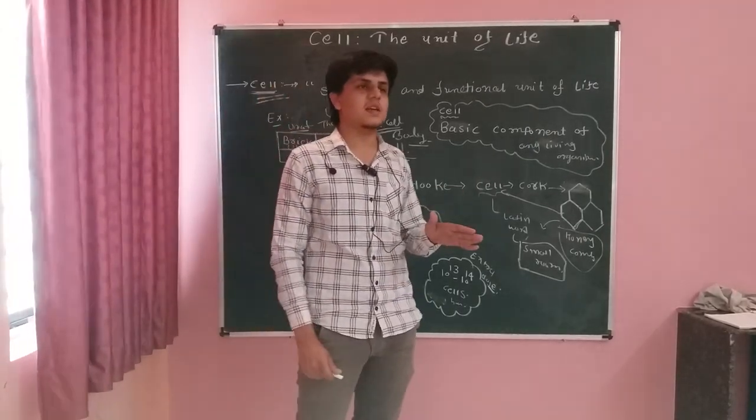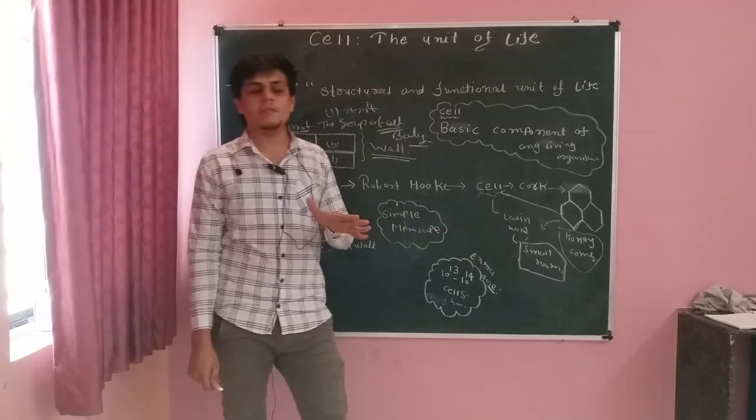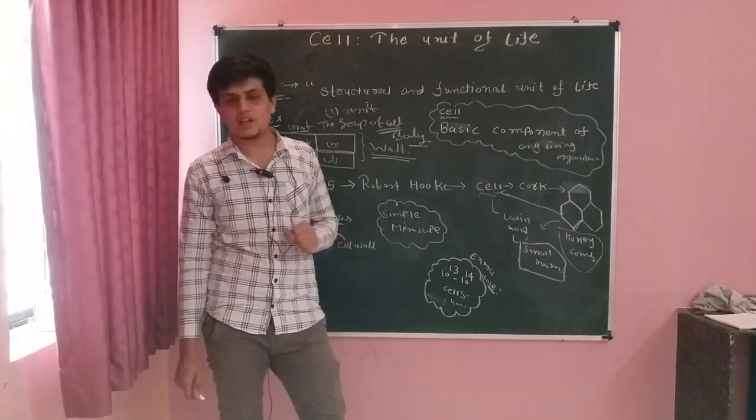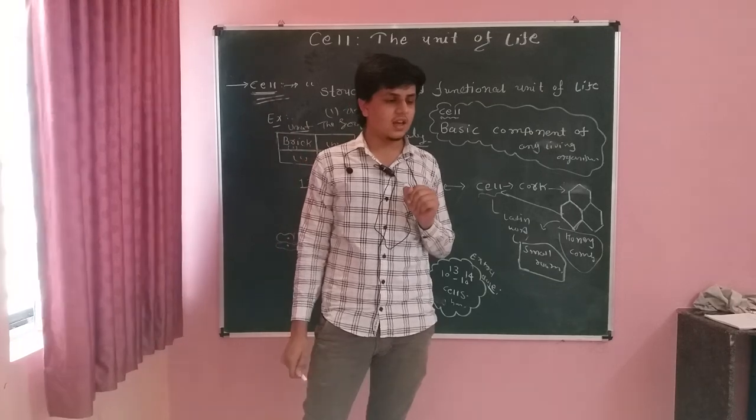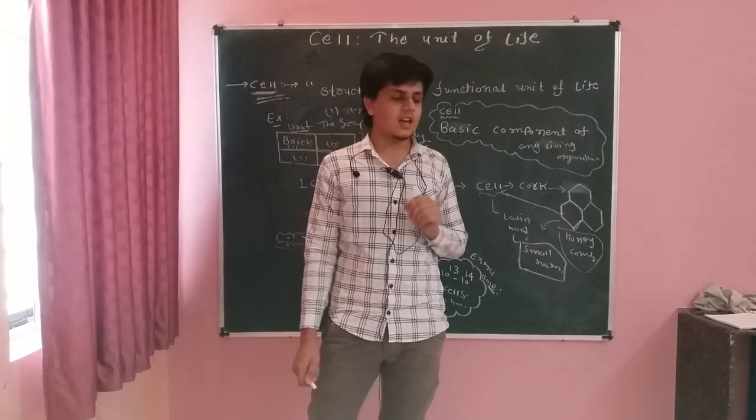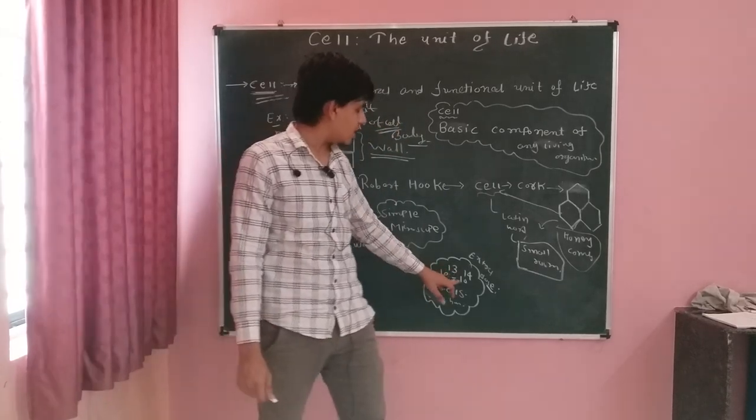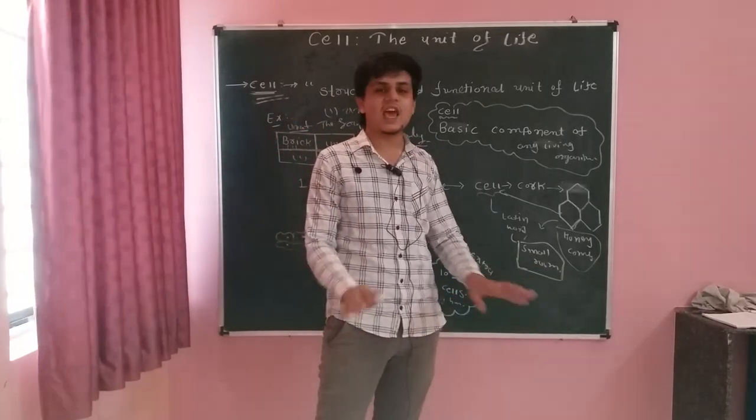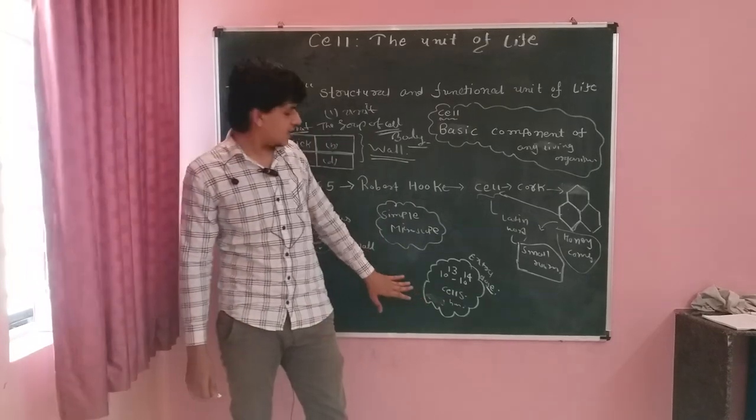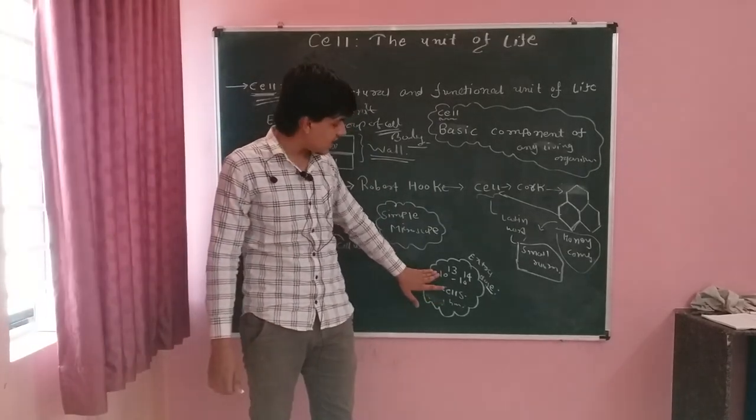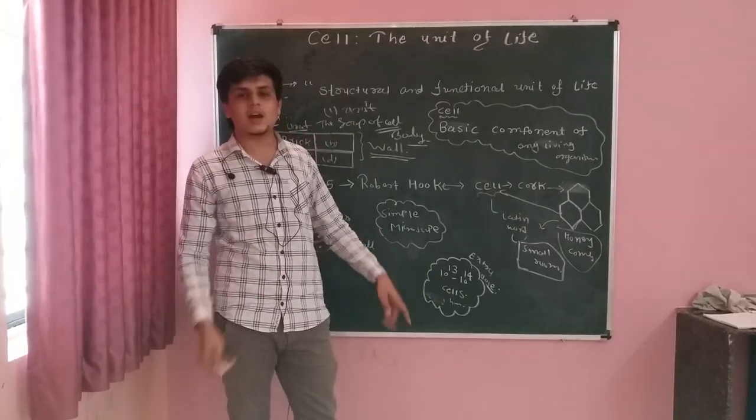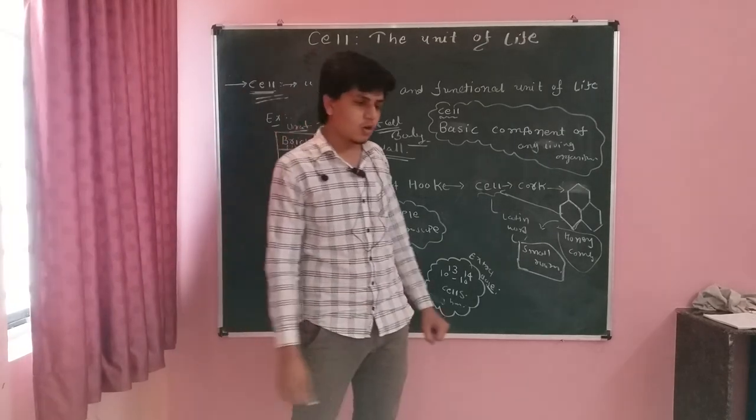Agar humare andar hume cells dekhne hain, to hum, humare andar kitne cells honge? Aap log andaza laga sakti hai? We cannot even imagine kya, humare andar kitne cells honge. So humare andar honge 10 raise to 13 to 10 raise to 14 cells in an average human. Itne tarah ke cells, itni quantity ke cells, humare sirf body mein present honge.